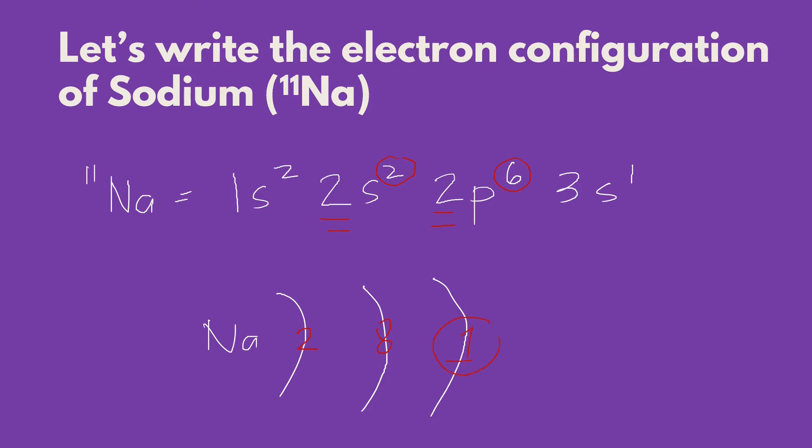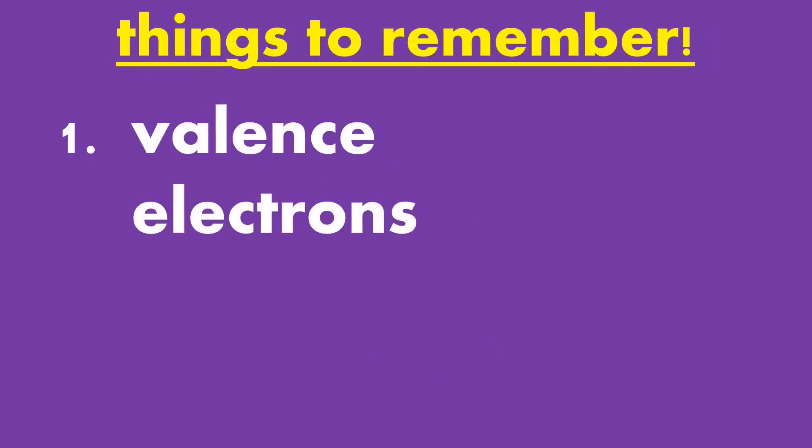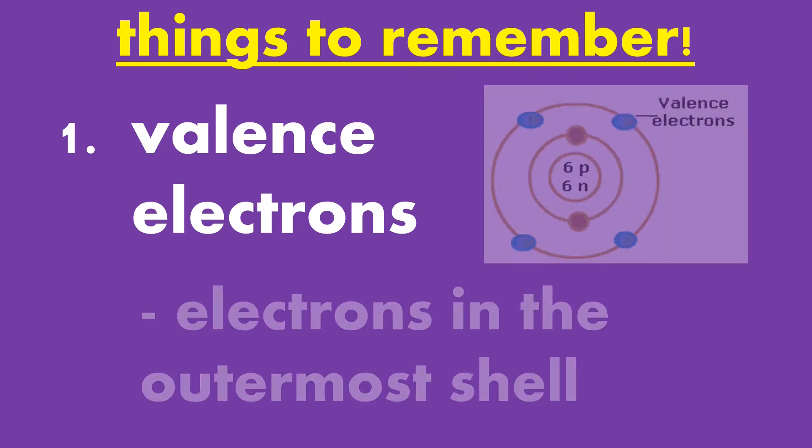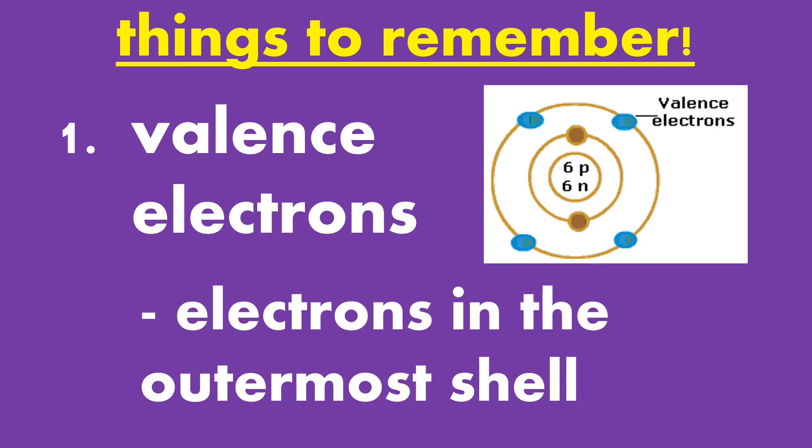And this 1 electron here on the outermost shell of the element sodium is what we call the valence electron. But, what is valence electron? Using electron configuration, we can identify the valence electron of an element. Valence electrons are the electrons in the outermost shell or valence shell.